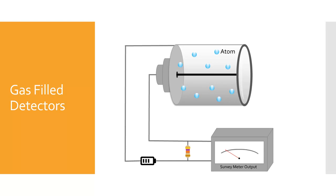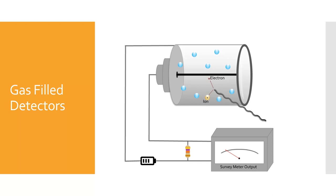We will start with gas-filled detectors. There are four main types and all four use the same basic principle to detect and measure radiation. We will review the process and then discuss the different types. The basic premise starts with ionizing radiation passing through a container, often a cylinder filled with air or gas. The radiation interacts with a gas atom by ionizing it. Ionization is the process of removing tightly bound electrons from an atom, so the more ionizing radiation, the more ionizations will occur.